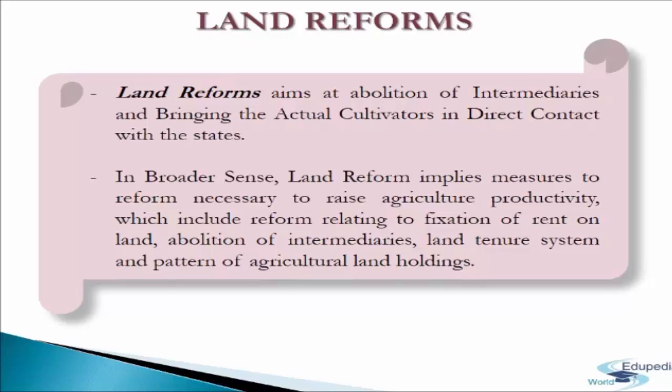It was concerned with reforms related to land ownership and land holding. In a broader sense, land reform implies measures necessary to raise agriculture productivity, which include reforms relating to fixation of rent on land, abolition of intermediaries, land tenure system and pattern of agriculture land holdings. Land reform aims at redistributing ownership holdings from the viewpoint of social justice and reorganizing operational holdings from the viewpoint of optimum utilization of land.